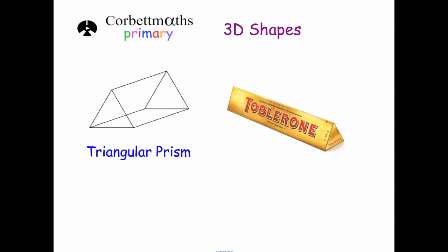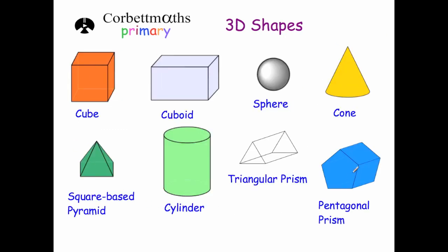So they're the names of some of the common three-dimensional shapes. Cube, cuboid, sphere, cone, square-based pyramid, cylinder, triangular prism, pentagonal prism.